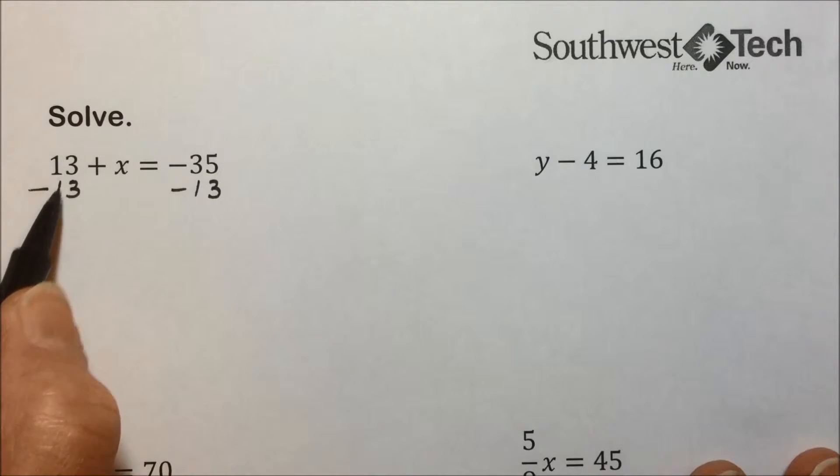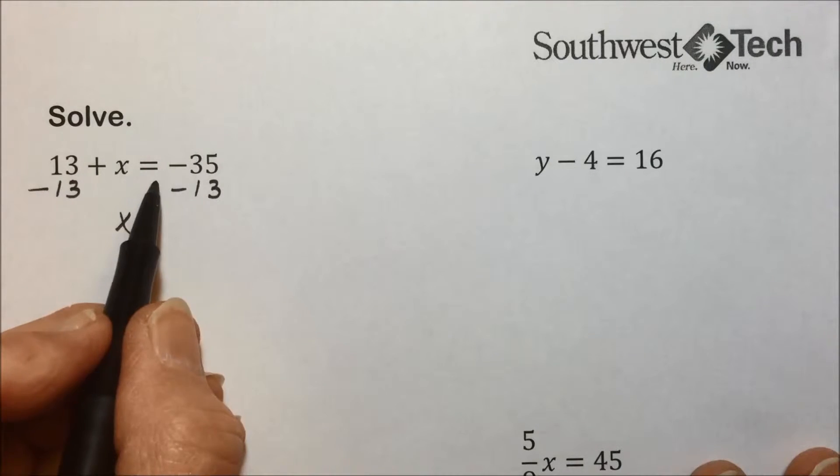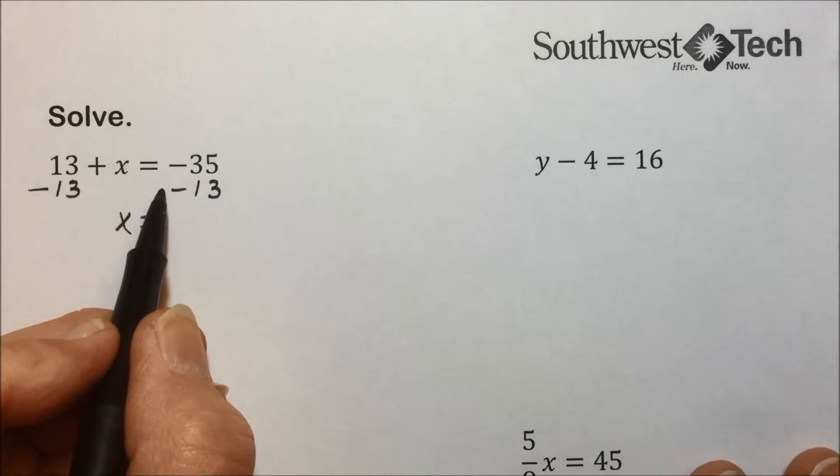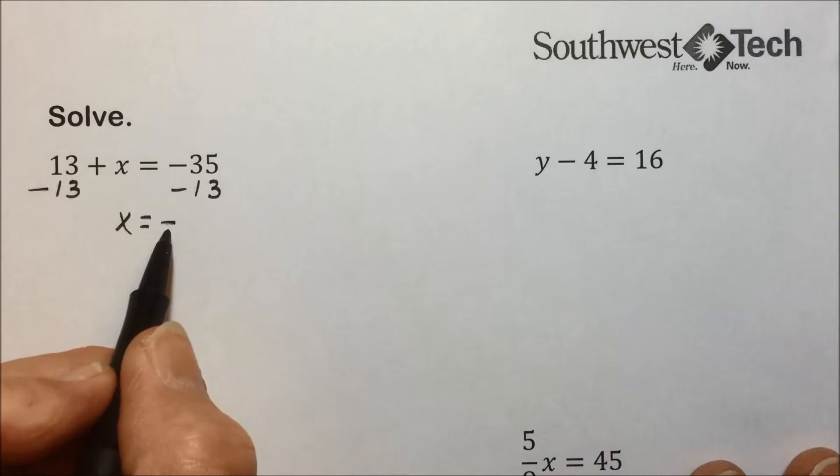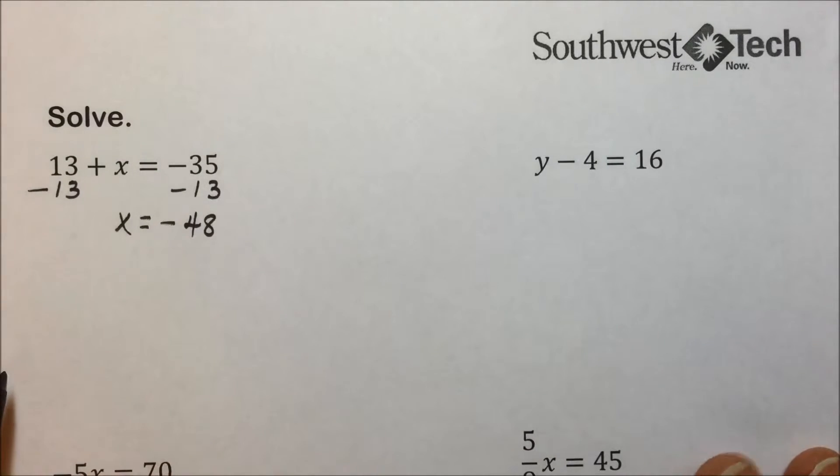Solving now, the 13's cancel out leaving x, and I have a negative 35 minus 13, or plus a negative 13. They're both negative so we can add those numbers together to give us a solution of negative 48.